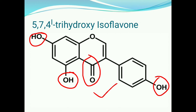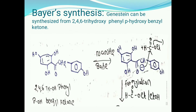Now we discuss about the synthesis of genistein. Here two synthesis methods are there. First one is Bayer's synthesis method. Second one is Spate synthesis method.